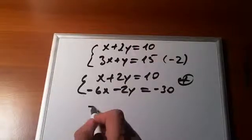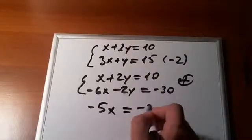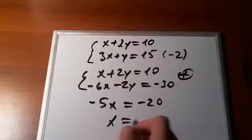Now, if we add these two equations together, we'll get rid of y terms. x minus 6x is minus 5x. 0 is equal to minus 20. Therefore, x is equal to 4.